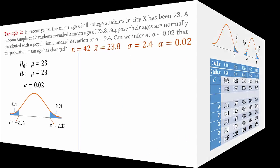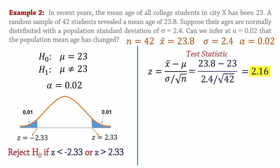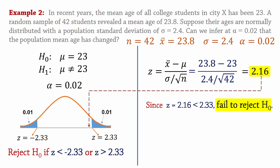So we reject the null hypothesis if the test statistic is less than negative 2.33 or if it is greater than positive 2.33. The test statistic remains 2.16 which does not fall into the rejection region. We therefore fail to reject the null hypothesis.